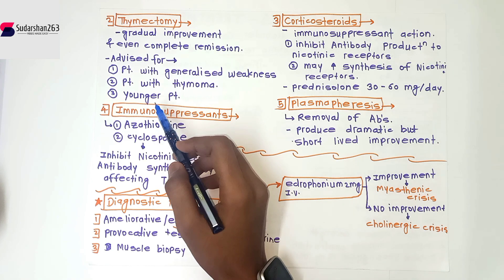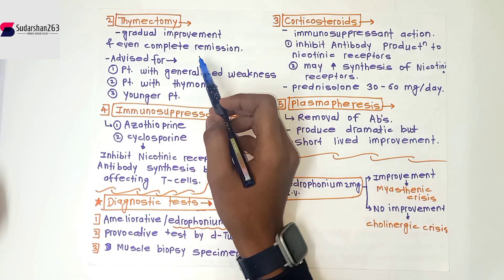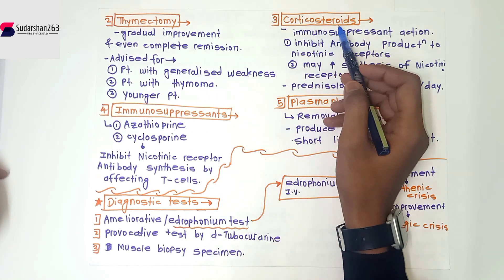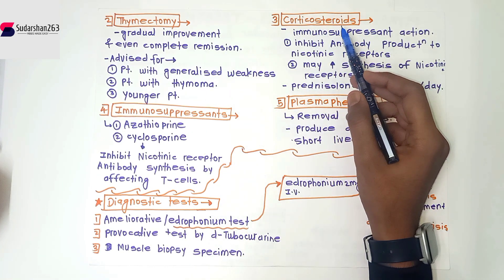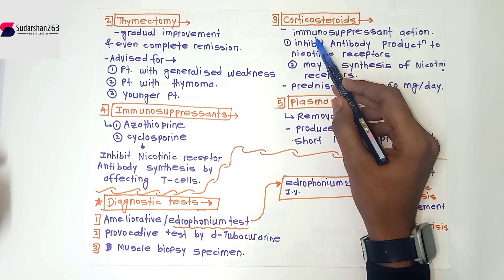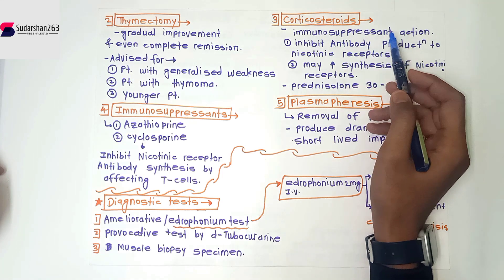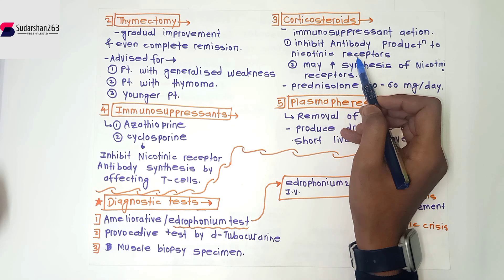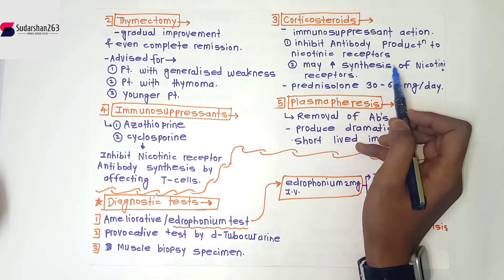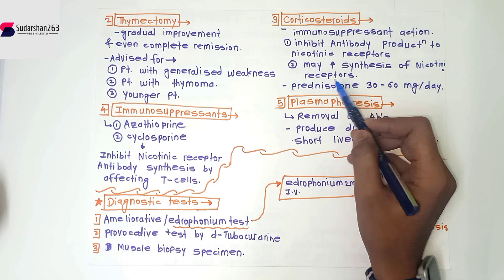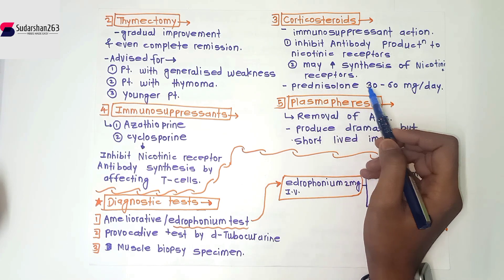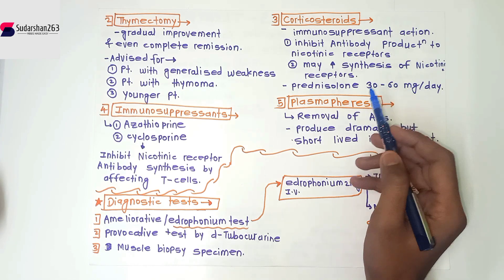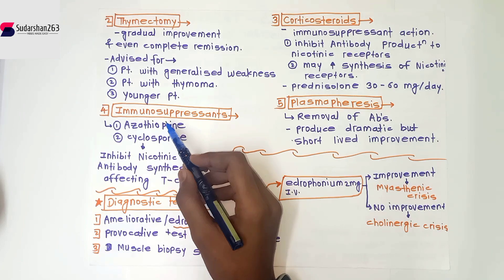Younger patients are preferred for thymectomy because complete remission can be achieved. The third treatment is corticosteroids. Corticosteroids benefit myasthenia gravis through their immunosuppressant action — they inhibit antibody production against nicotinic receptors and may increase the synthesis of nicotinic receptors. Prednisolone 30 to 60 mg per day is given.